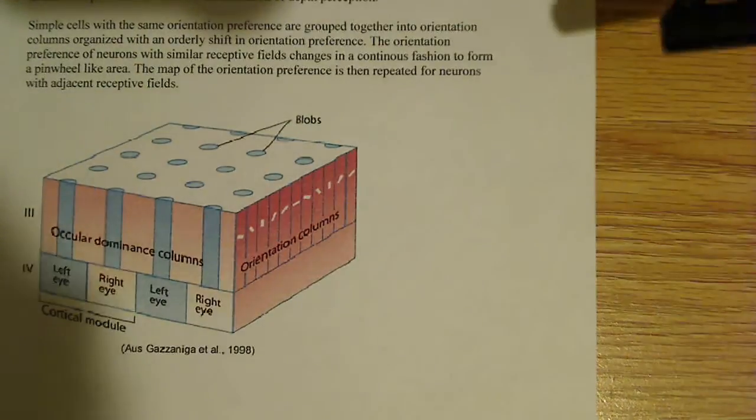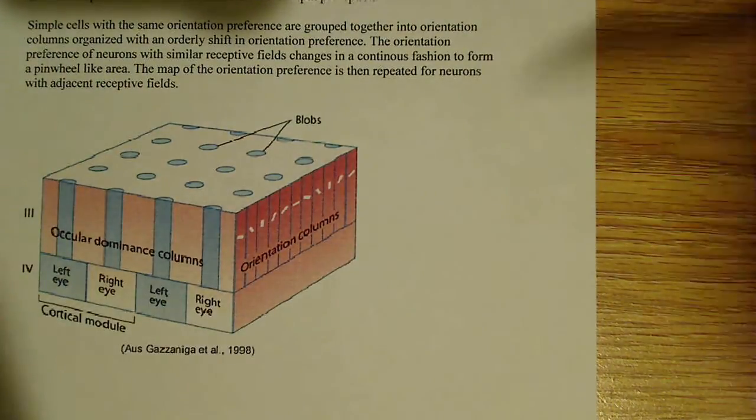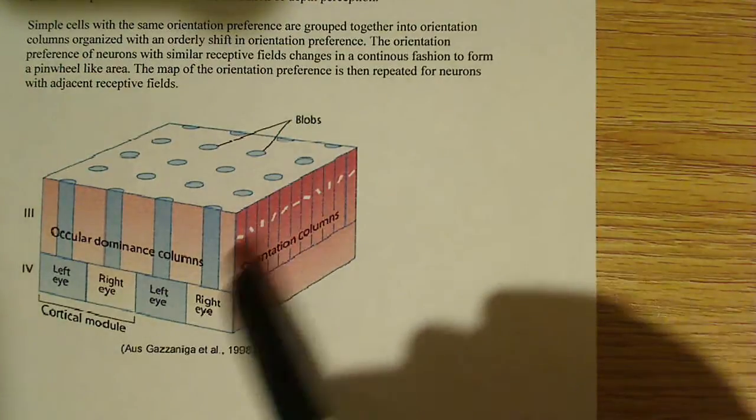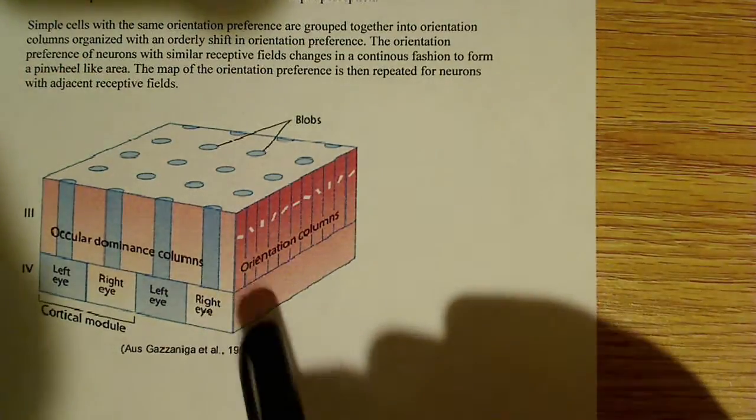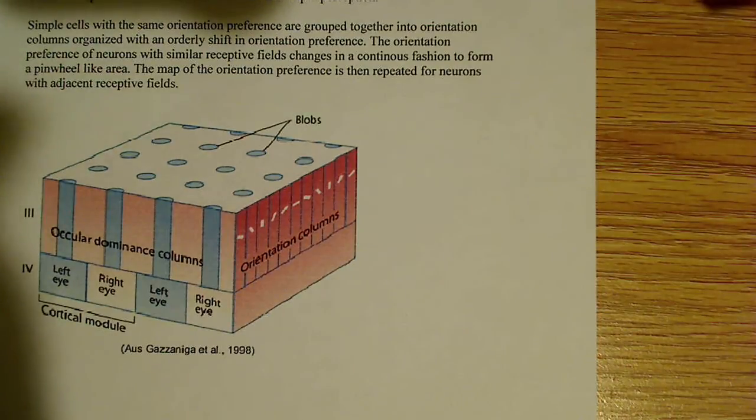So the orientation preference of neurons with simple receptive fields changes in a continuous fashion. That's what I was saying. It changes in an organized and orderly fashion by a set number of degrees. Each one of these columns responds to a line of different orientation, slightly different orientation.